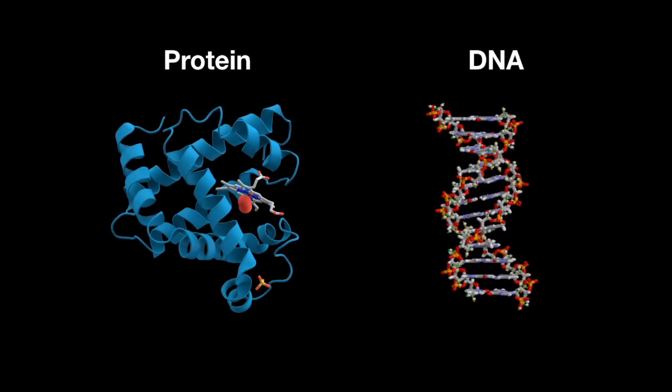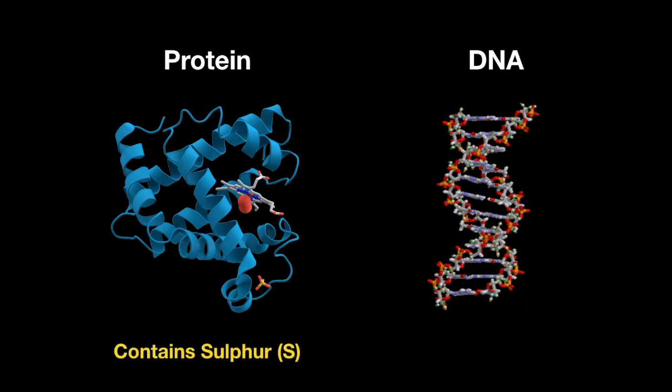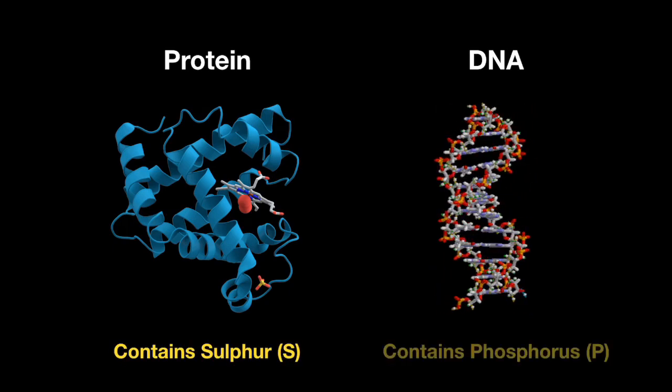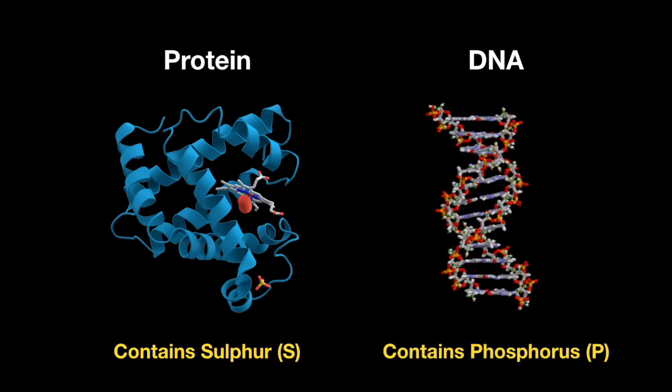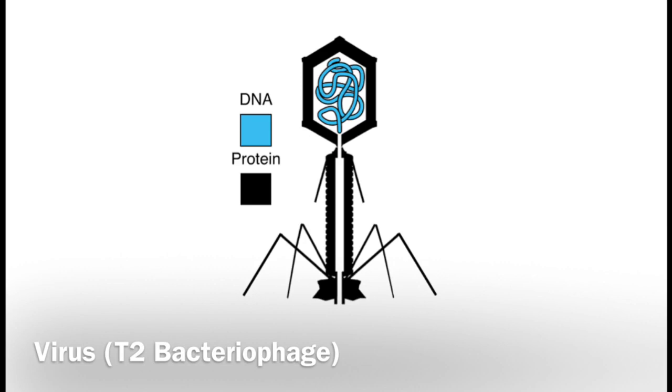In order to carry out these experiments, Hershey and Chase took advantage of the fact that sulfur is found in proteins but not DNA, while phosphorus is found in DNA within the sugar phosphate backbone. They used a specific virus known as a T2 bacteriophage, formed of DNA that you can see in blue, encompassed by a protein shell.